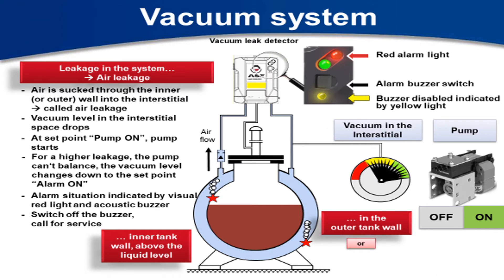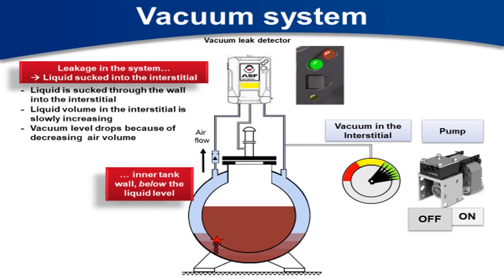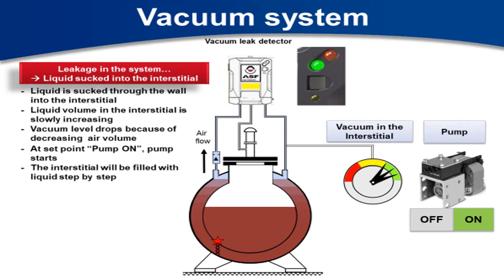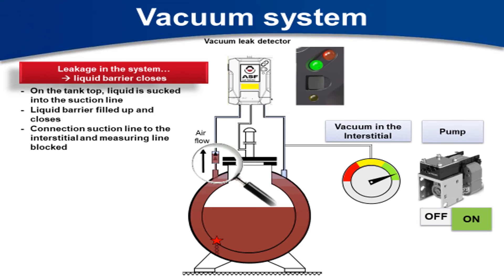You'll have the alarm telling you there's a problem and you need to get somebody out to look at it. If there's a leak on the primary tank below the liquid level, you'll get liquid in the interstitial space and that'll cause a change in pressure for the vacuum, triggering an alarm. Similarly, if the groundwater level rises above a certain point it will be pulled into the interstitial space and cause it to go into alarm.